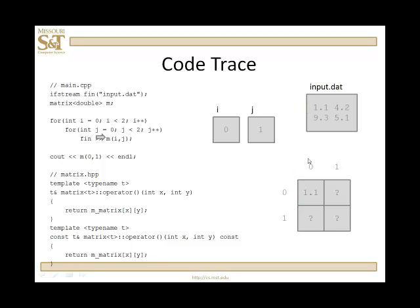Now j jumps to 1. I need to access element m(0,1). Because I'm writing into it, I'm going to use the non-const version of the operator. I return m(0,1) and then write into that location from the input data file 4.2.